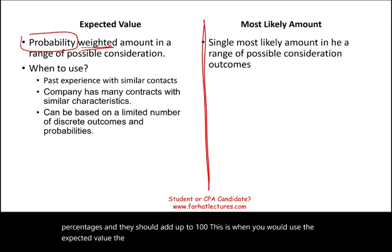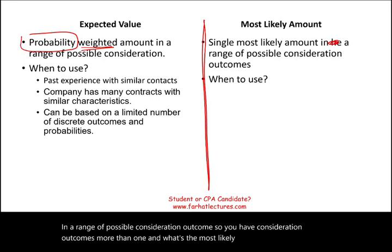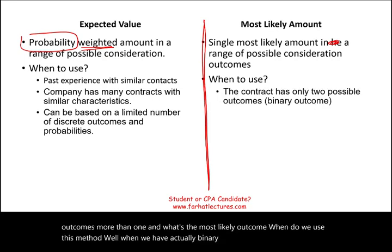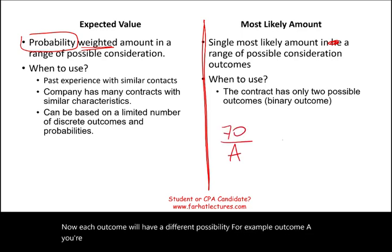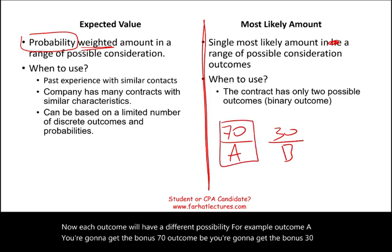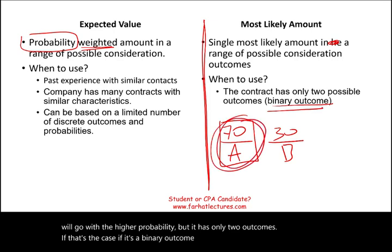The most likely method is the single most likely amount in a range of possible consideration outcomes. We use this method when we have a binary outcome — the contract has only two possible outcomes, either this outcome or that outcome. For example, outcome A gives the bonus 70% of the time, outcome B 30% of the time. We go with the higher probability. If it's a binary outcome, you go with the higher consideration.